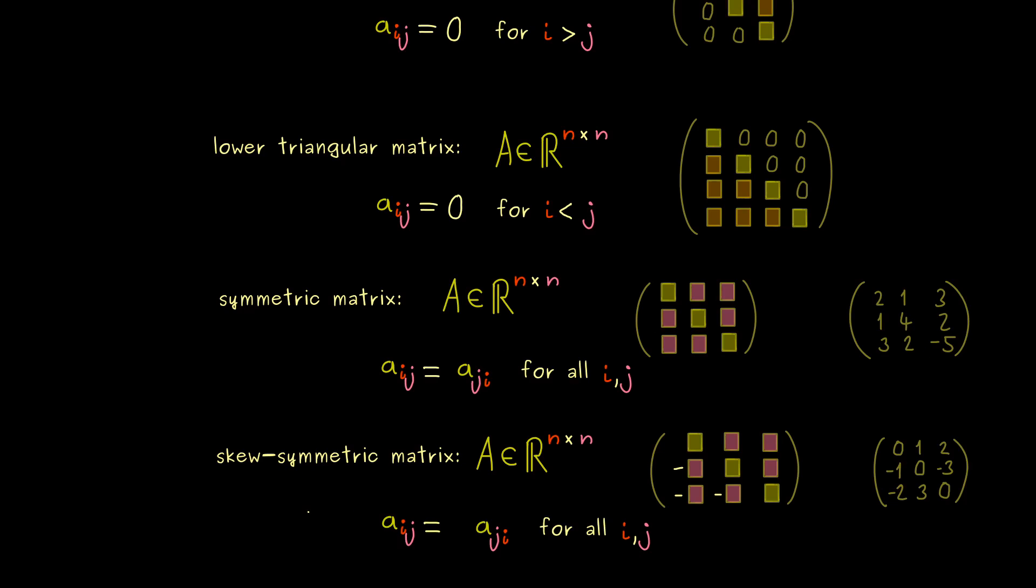For the definition of a skew symmetric matrix we have the same formula as above but with a minus sign here. So in summary you see we have a lot of names for different matrices and why they are important we will see in the next videos. So let's meet there and have a nice day. Bye.